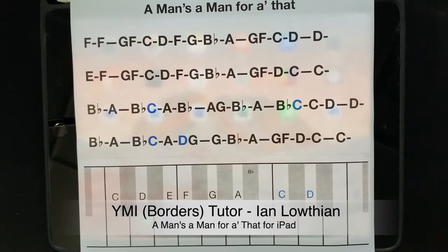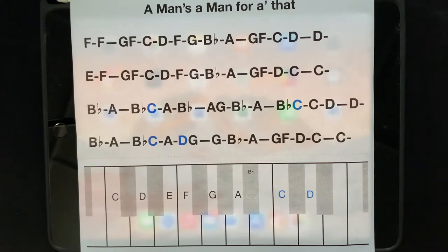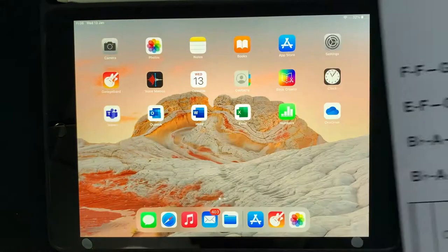Okay, now we're going to have a go at playing this tune, A Man's a Man for All That, another famous Robert Burns tune. So I'll put this to the side for a minute. We're going to use this sheet and again GarageBand app.